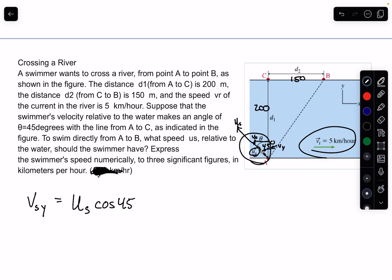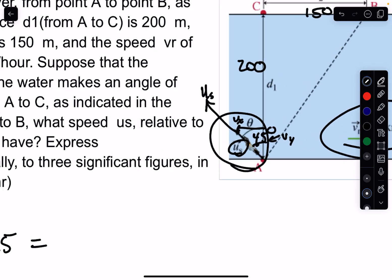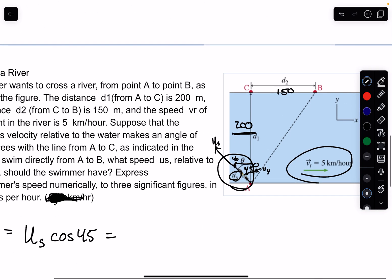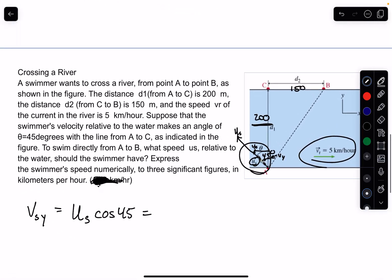We also know that in the Y direction, he's going to travel 200 meters. So that's equal to 200 over some time t, because velocity is distance over time.